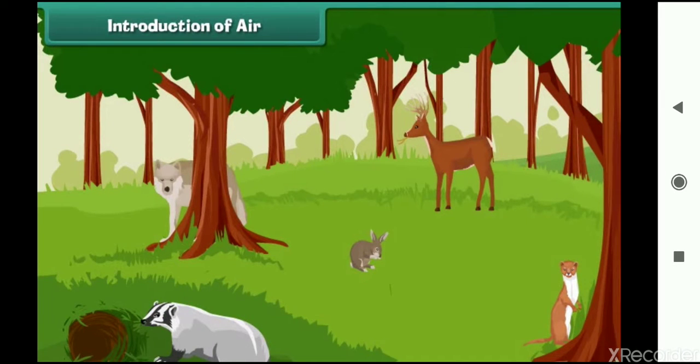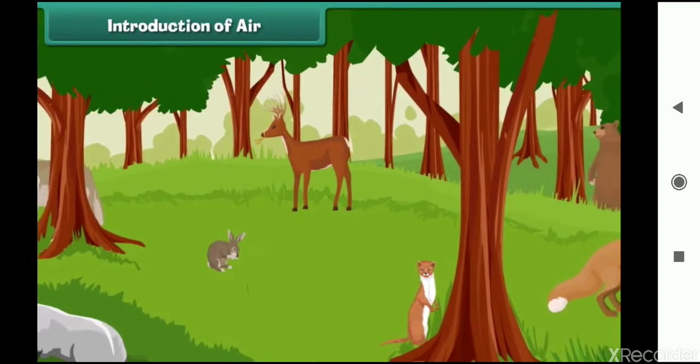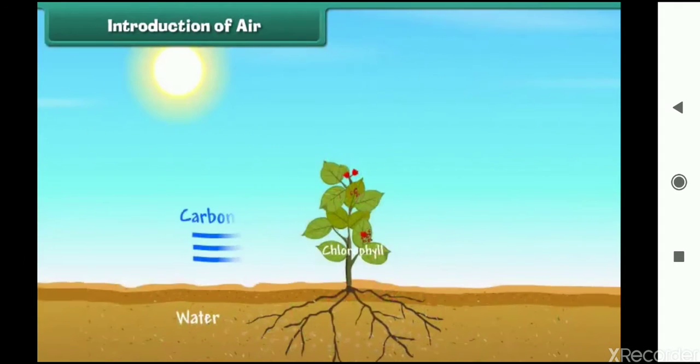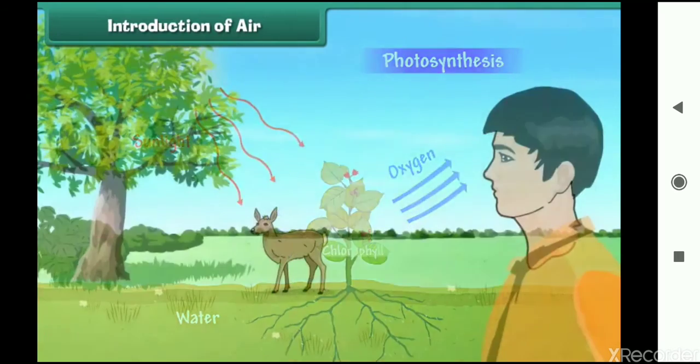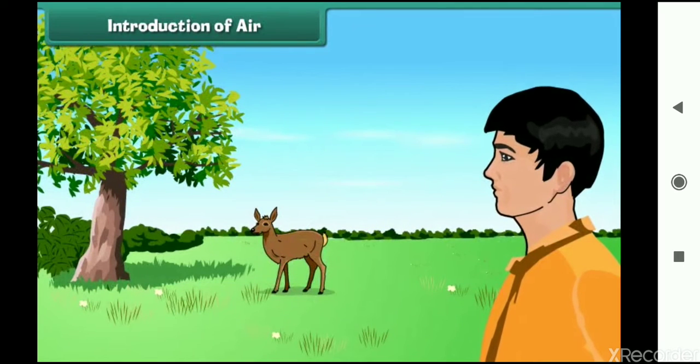Air is very important for almost all life on earth, including plants and animals. Plants need carbon dioxide from air to do photosynthesis and release oxygen into the air. Human beings and animals need to breathe air to get the oxygen they need to survive.